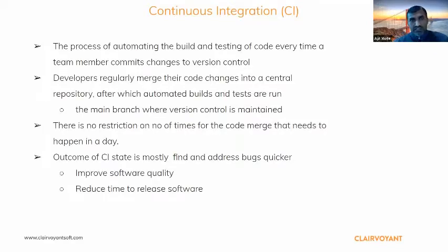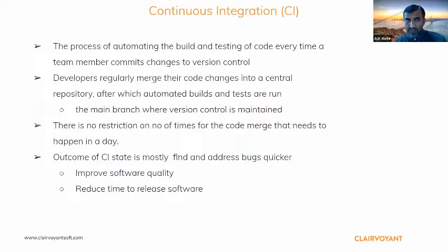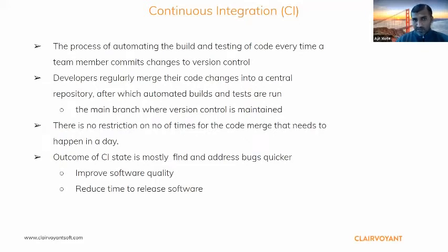So what is continuous integration? It is basically a process which automates the build and testing of code every time a team member commits. The moment I updated that index.html, it got committed to the repository, and on the back end certain pieces take care of building it, making sure everything is good, doing the testing, and deploying it to the actual infrastructure. That is where continuous integration plays an important role.